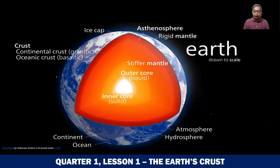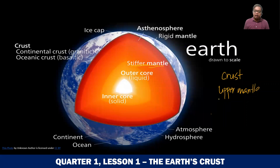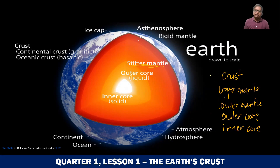Now, the Earth's crust is known as the outermost layer and the thinnest layer of the Earth. We have the outermost layer, which is the crust. And then right beneath the crust is the upper mantle, and then the lower mantle. And then we have the outer core and the inner core. So remember, guys, that as we go deeper, the temperature increases.